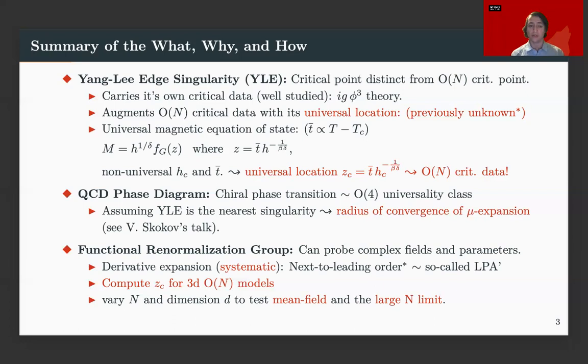So how do we study this thing? Well, we use the functional renormalization group. With this approach, we can probe the complex fields and parameters just fine. To use it, we take a derivative expansion, which is systematic. And this might be a slight abuse of terminology, but we have a next to leading order result that's so-called LPA prime.